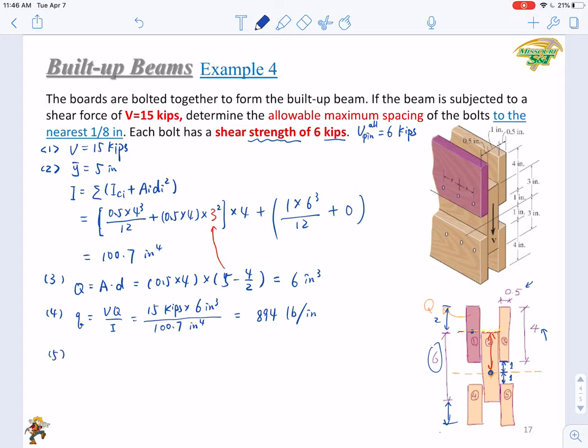So the last step, first of all, we'll just list the core equation: m times V_pin allowable larger than qs. Here what is the value of m? You have just one row of bolts, so m equals 1. And the V_pin allowable equals six kips, that is 6,000 pounds.